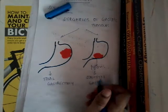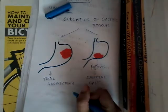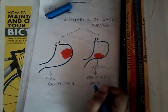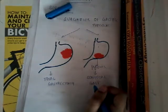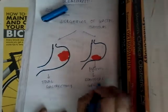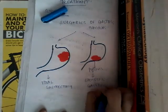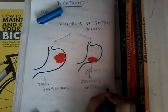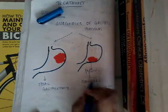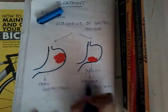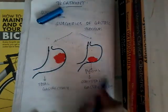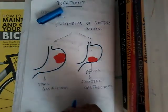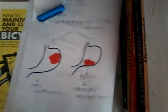Whereas in SRB, this is given as radical gastrectomy, and subtotal gastrectomy is referred to as lower radical gastrectomy. So in Bailey and Love there are only two surgeries: total gastrectomy and subtotal gastrectomy. Let us learn about total gastrectomy first and then subtotal gastrectomy.